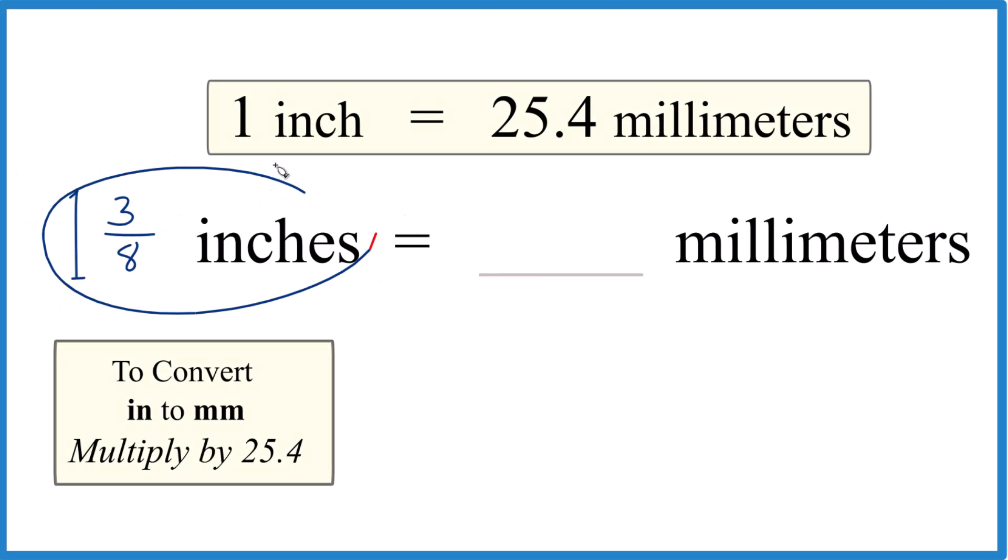Let's convert 1 3/8 inches to millimeters. Here's how you do it. First off, let's get this 3/8 to be a decimal. If we have a decimal, 1 3/8 as a decimal, it's going to be easier to work with.